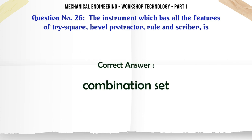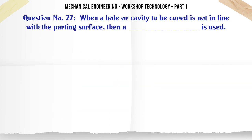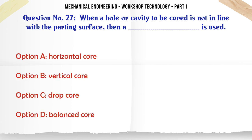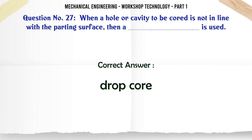When a hole or cavity to be cored is not in line with the parting surface, then which core is used? A. Horizontal core. B. Vertical core. C. Drop core. D. Balanced core. The correct answer is: Drop core.